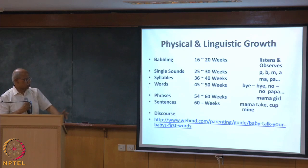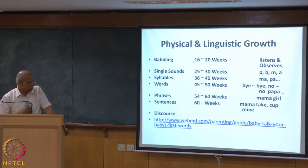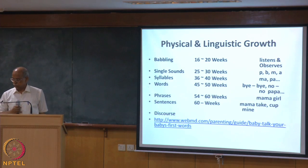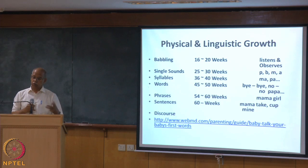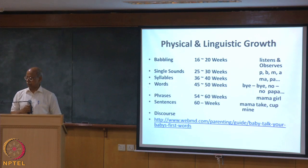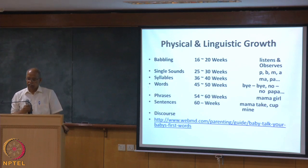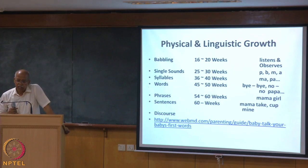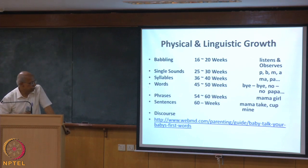Language milestones are generally attested — at certain ages, a child will have certain language proficiency. Why does this happen worldwide? We cannot say there is nothing like universal grammar. Language is a God's gift to mankind — not an invention, but an attribute. Like God created fish to swim and birds to fly, He perhaps created man to speak. That is why Greek philosophers called human beings 'homoloquins' — talking animals.